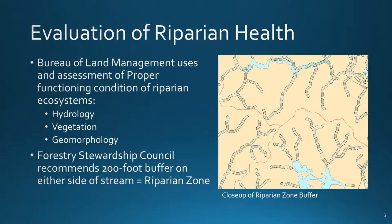The process for evaluating riparian ecosystem health involves evaluation of vegetation, hydrology, and geomorphology. Because the streams in coastal Marin County are sources of potable water and support native species, the Forest Stewardship Council defines the boundary of a normal riparian zone as a distance of 200 feet from each bank. We judge this to be a useful delineation and have applied a similar buffer to our map of streams and rivers in coastal watersheds.